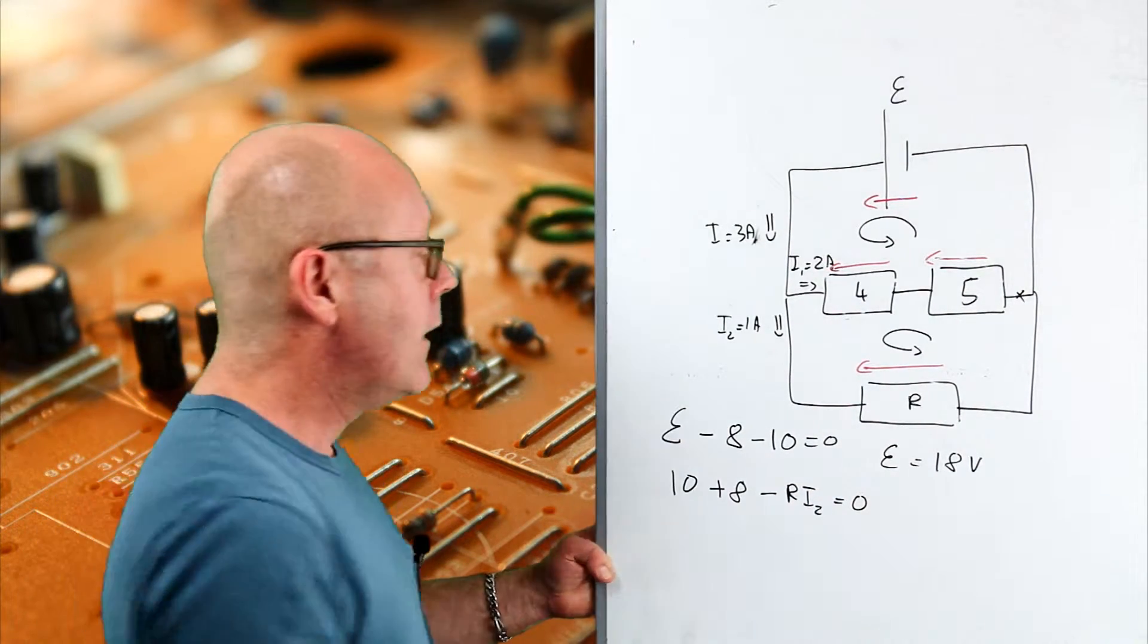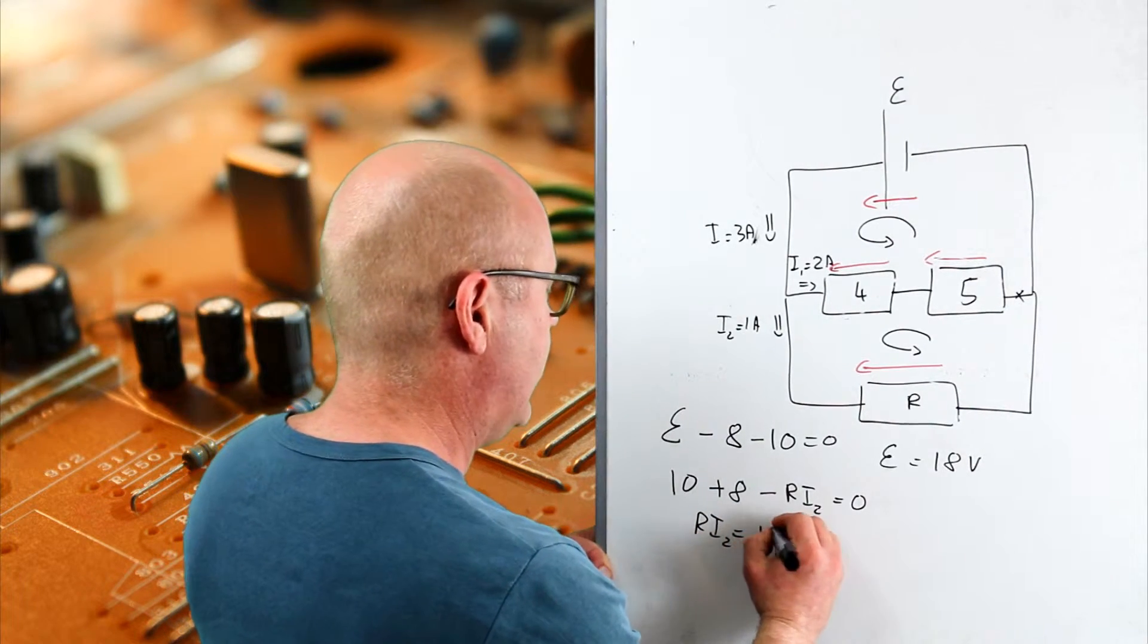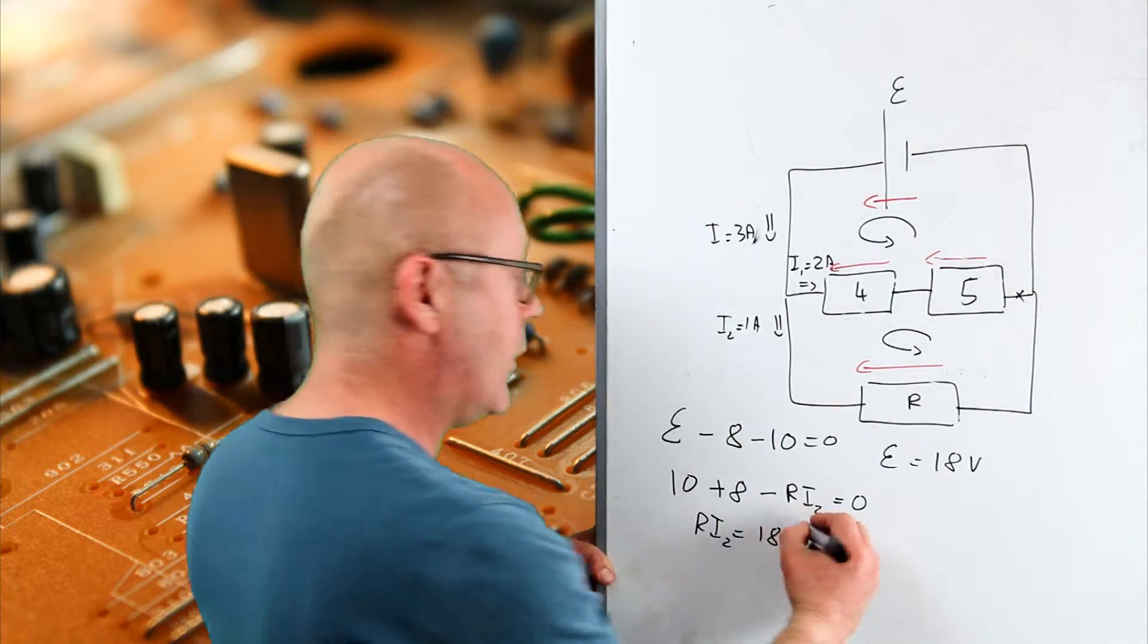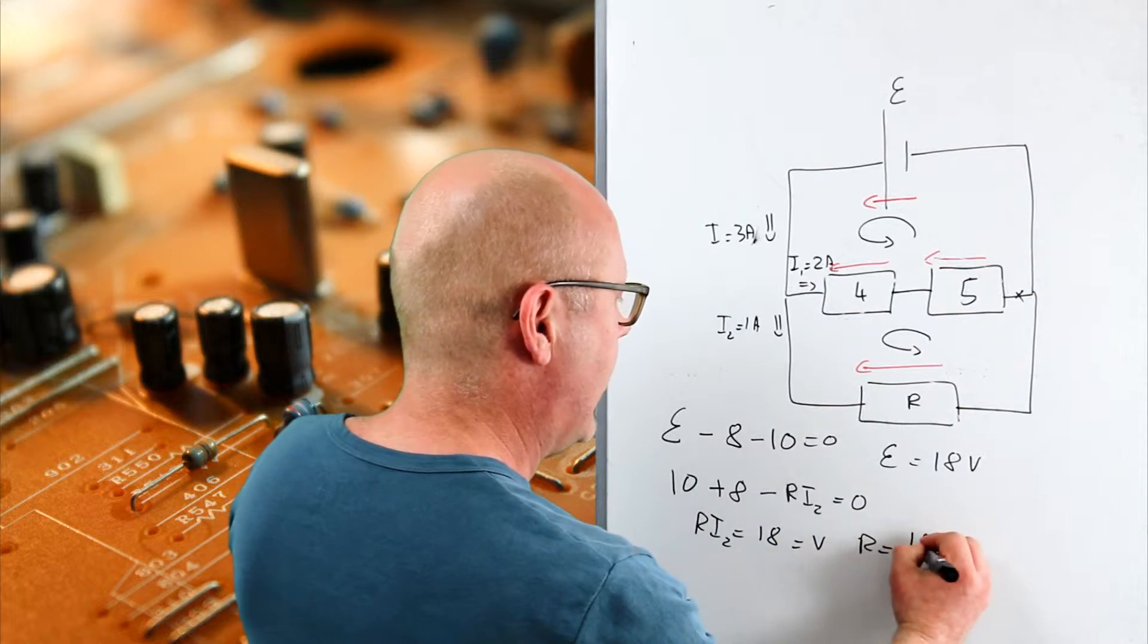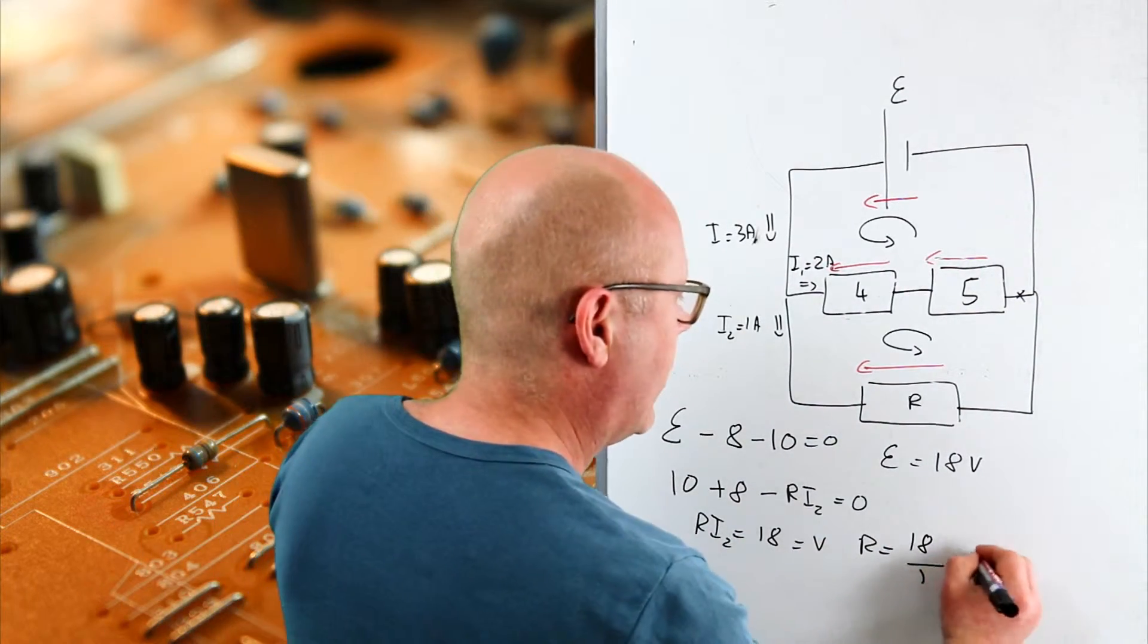So I have Ri2 equals 18. I2 is 1A, so I know that R equals 18 divided by 1, which is 18 ohms.